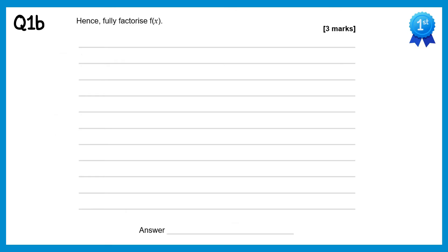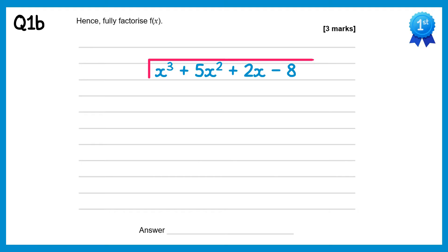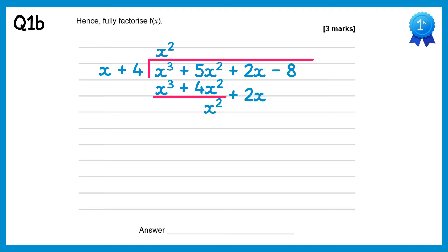For part b we need to factorise f of x. So we'll take the polynomial and divide it by the factor x plus 4. So x cubed divided by x is x squared, then multiply this back. x squared times x is x cubed and x squared times 4 is plus 4x squared. Now we subtract these — the x cubes will cancel. 5x squared take 4x squared is just 1x squared. Bring down the next term and then we'll do x squared divided by x which is just x. Multiply that back.